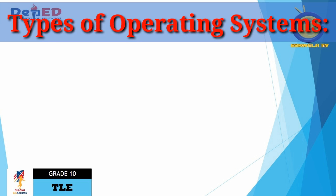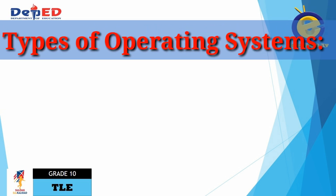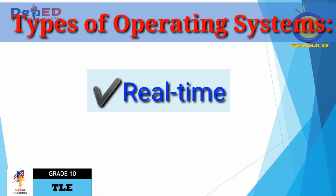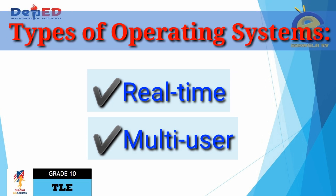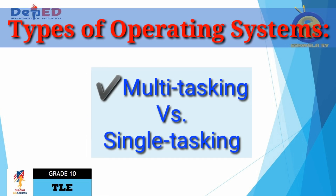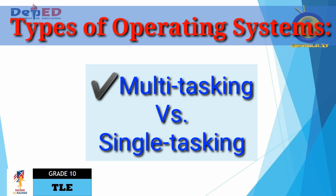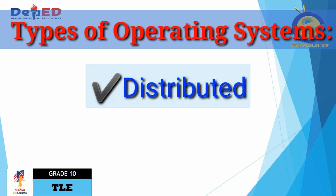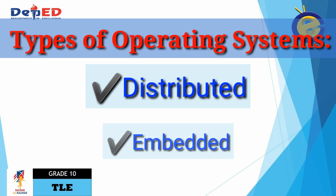We already know the types of operating systems. They are real-time operating systems, multi-user operating systems, multi-tasking versus single-tasking operating systems, distributed operating systems, and embedded operating systems.